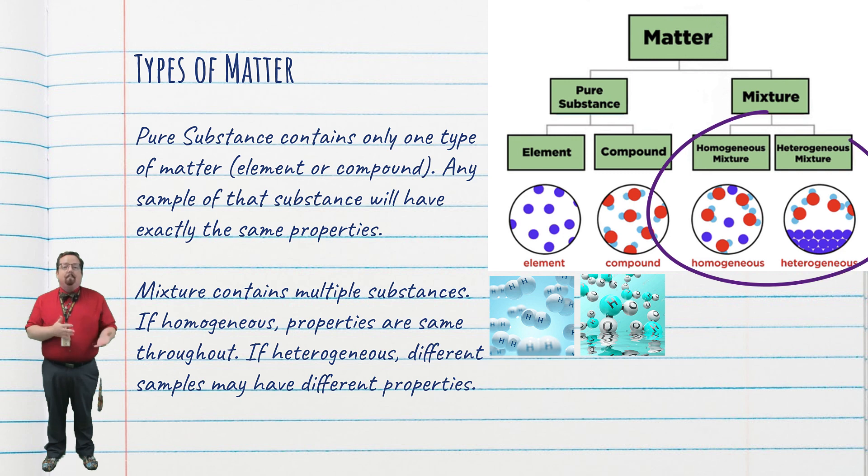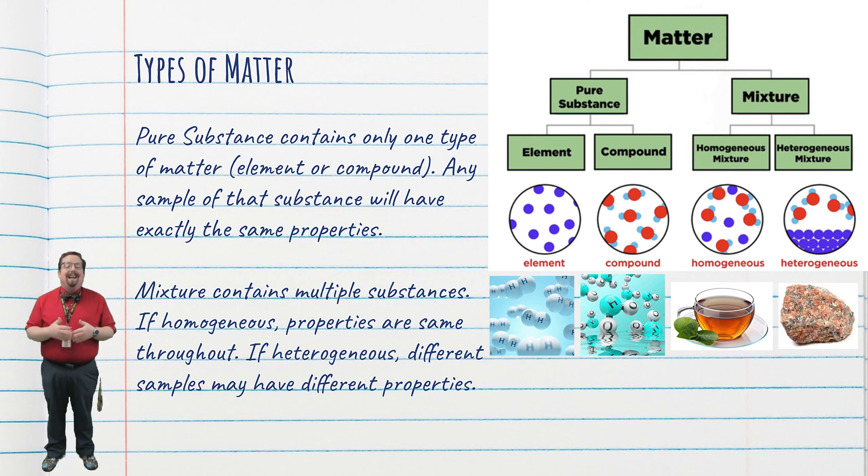A mixture has multiple substances mixed together. If those substances are evenly distributed throughout the mixture, it's considered homogeneous, and the properties we measure should be the same from any point in the mixture that we're measuring. If the substances in a mixture are not evenly distributed, different parts of the mixture will have different properties, so it's called a heterogeneous mixture.